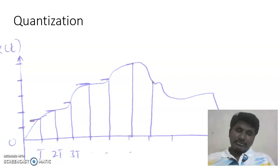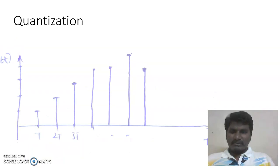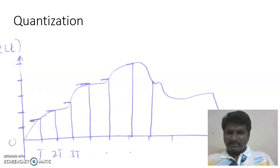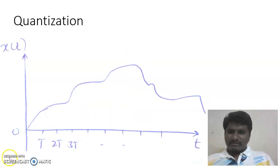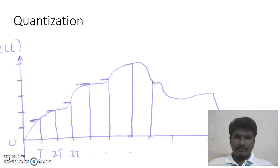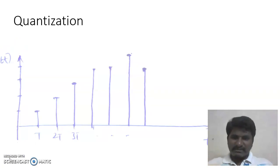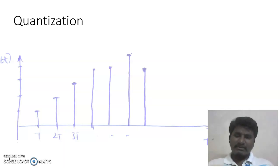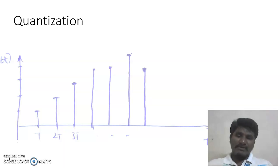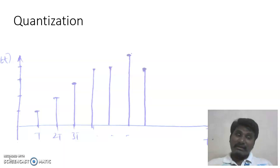In quantization, what we are trying to do is limit the number of amplitude levels that a signal can take. At time t equal to T, the value is between two quantization levels, but we approximate the signal's amplitude to the nearest quantization level — say, the first or second quantization level. Similarly, at t equal to 2T, the sample value is approximated to the nearest quantization level. The whole signal now contains only specific amplitude levels.